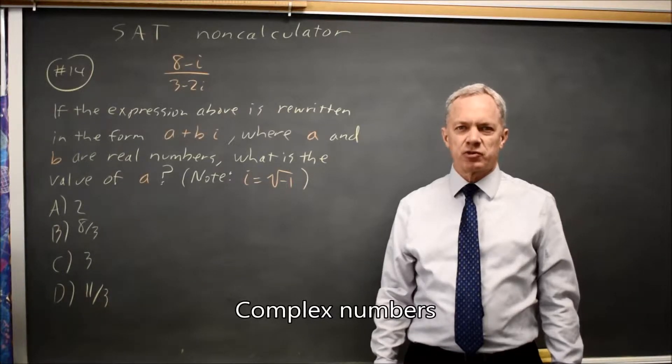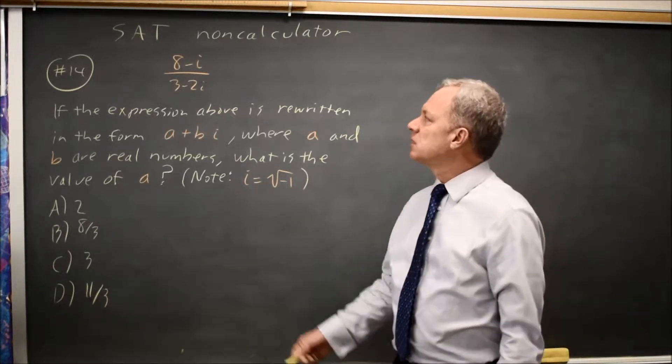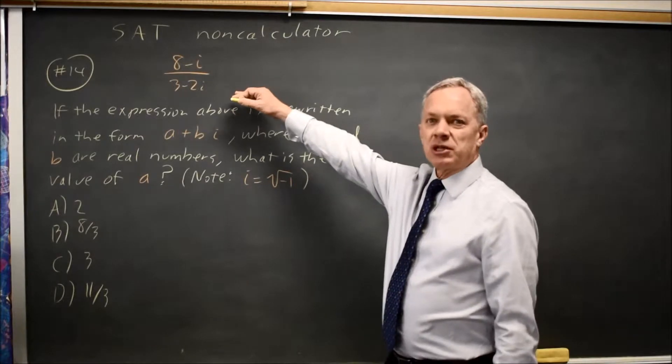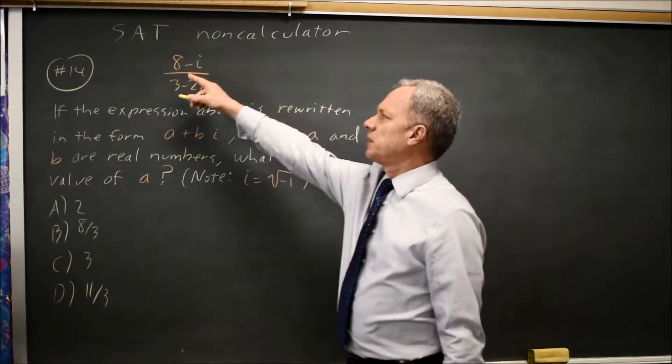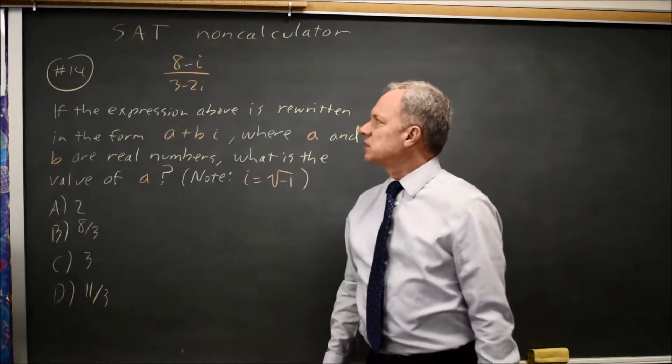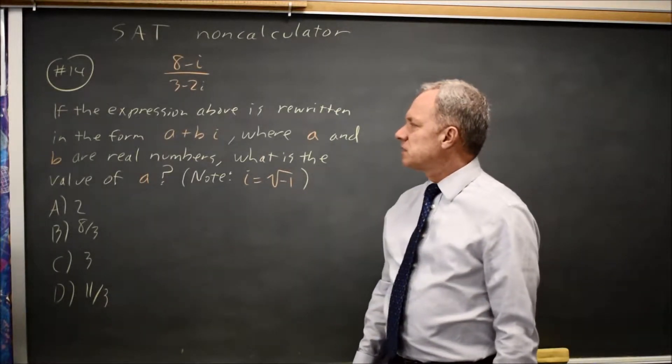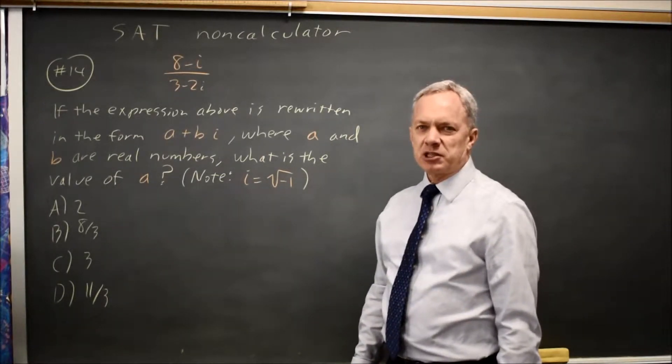This is non-calculator question number 14. College Board gives us a ratio of two complex numbers, complex numbers in the form a plus bi where i is the square root of negative 1, and they ask you to rewrite this fraction in the form a plus bi.